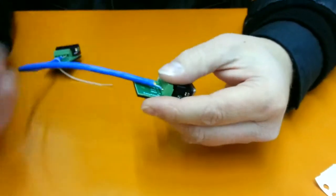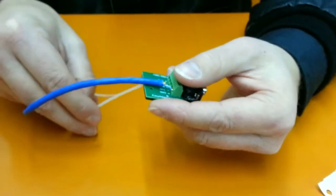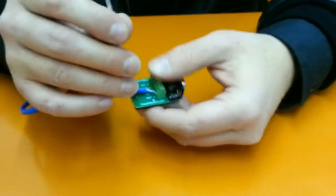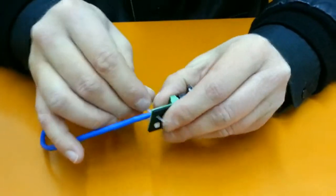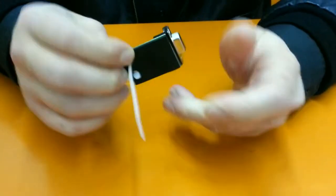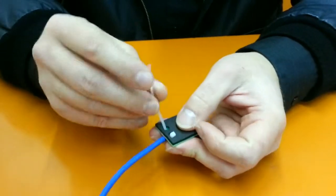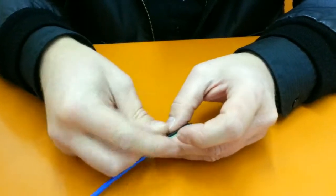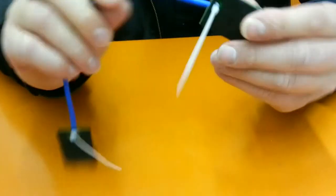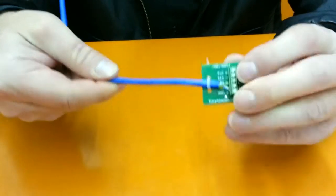And then we're going to use a zip tie for stress relief on the connection. Make sure that the zip tie is on the jacket itself and not on the wires. And you'll notice once you tie it down, if you give it a little tug, it has that stress relief.